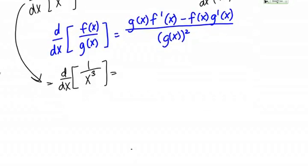So g times f prime of x, or bottom times the derivative of the top. So that's x cubed times the derivative of 1,